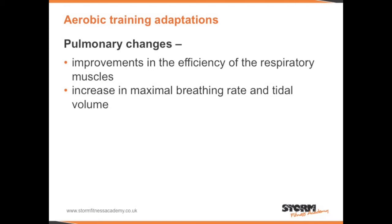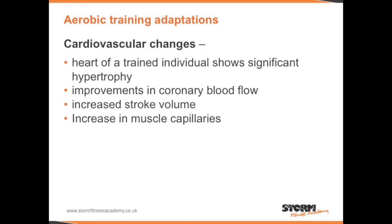Exercise and training leads to long-term training adaptations. The three energy systems all adapt in different ways. The aerobic system will undergo some pulmonary changes — for example, improvements in the efficiency of the respiratory muscles and an increase in maximal breathing rate and tidal volume. There will also be some cardiovascular changes: the heart of a trained individual will show significant hypertrophy, there will be improvements in coronary blood flow, increased stroke volume, and an increase in muscle capillaries.